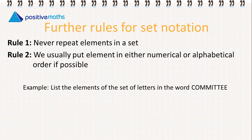Let's discuss some further rules for set notation. Rule number one: we never repeat elements in a set, so we only ever list each element once. Rule number two: we usually put the elements in either numerical or alphabetical order if possible. The word 'usually' there is important — it won't always be in order, but where we can, we will put them in order.